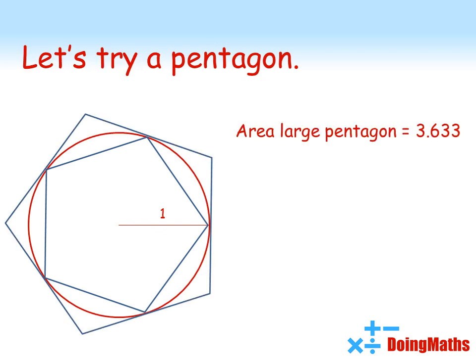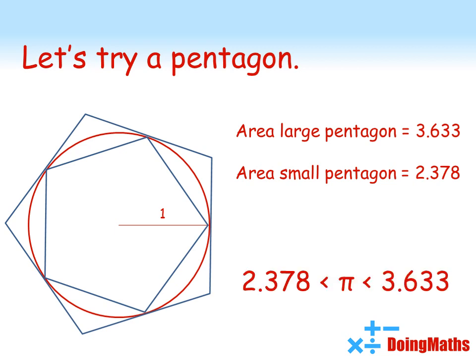So with our pentagons, we've got the large pentagon has an area of 3.633. The small pentagon has an area of 2.378. So pi must be in between 2.378 and 3.633. This is more accurate than in between 2 and 4, but still a long way off being anything usable.